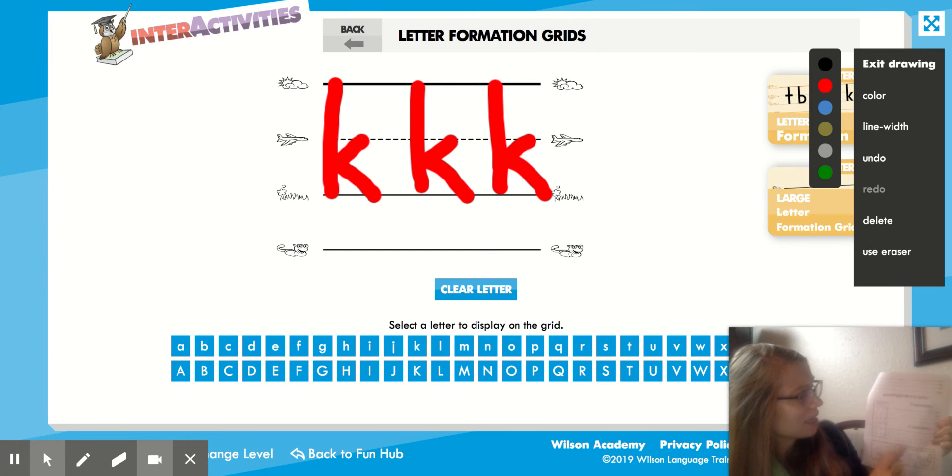After you write your first and last name, practice writing your uppercase K's, which also start on the skyline, your lowercase K's, just like we practiced, and circle all the upper and lowercase K's in the box.